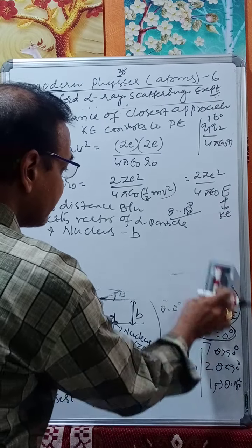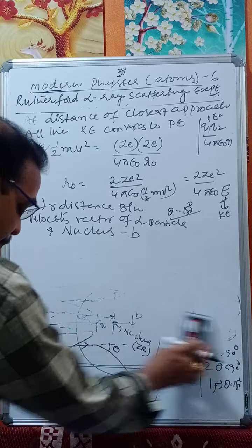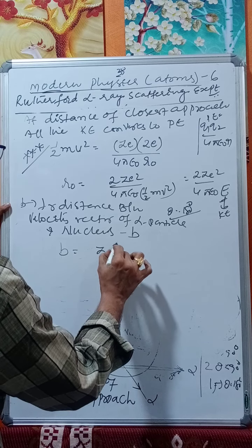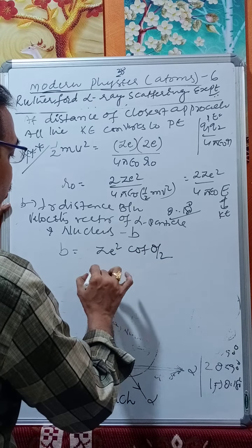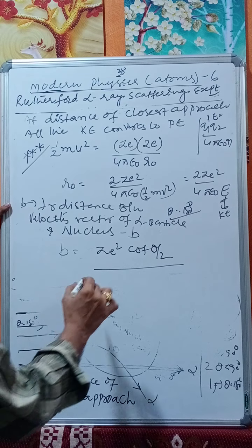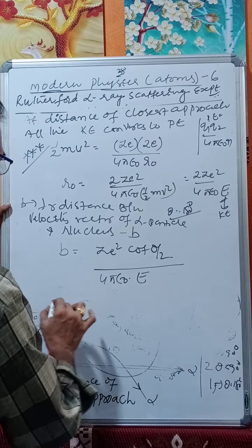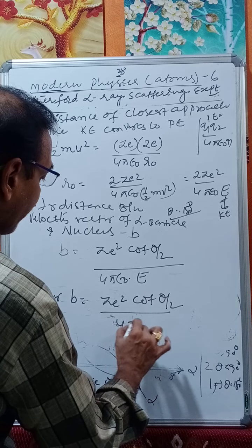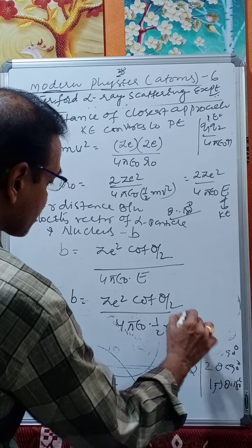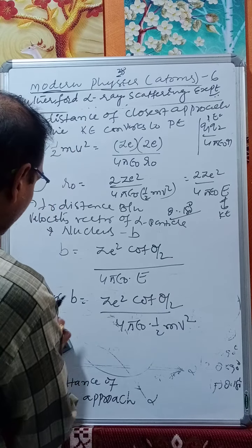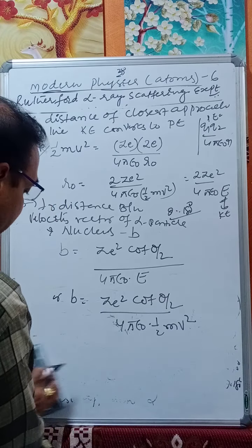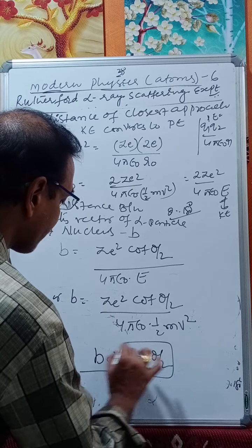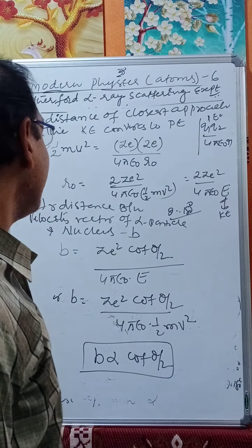The expression for impact parameter is: b = Ze² · cot(θ/2) / (4πε₀ · ½mv²). From this, the key proportionality is: b ∝ cot(θ/2). This is a very important relationship.